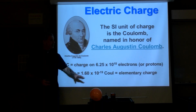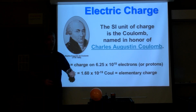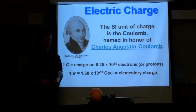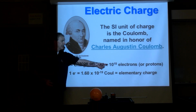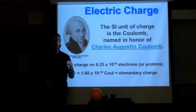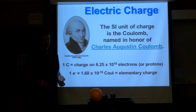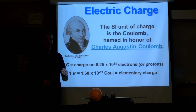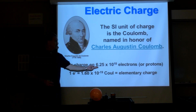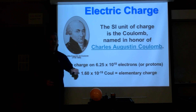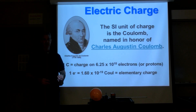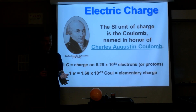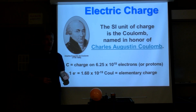That's an awful lot of electrons to get one coulomb of negative charge. 10 to the 18th is 10 to the 9th times 10 to the 9th — that's a billion billion. This is 6.25 billion billion electrons. So it takes a lot of electrons put together to make up one coulomb of charge.